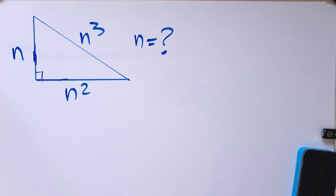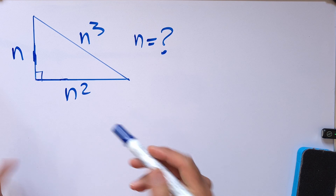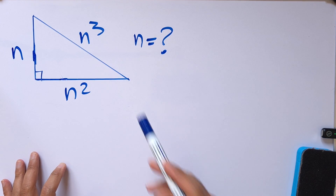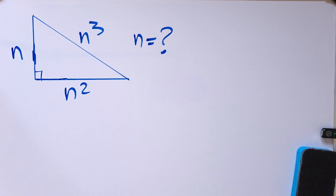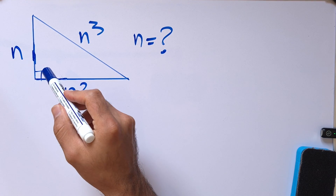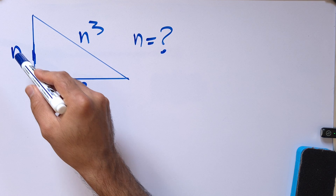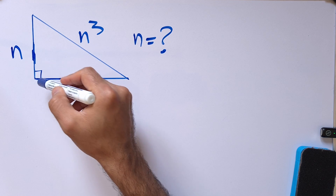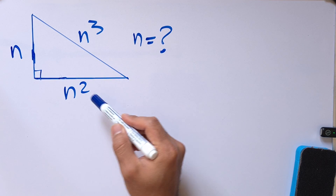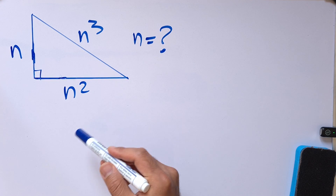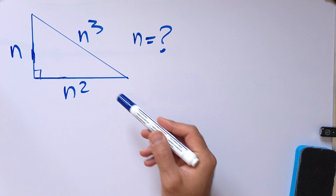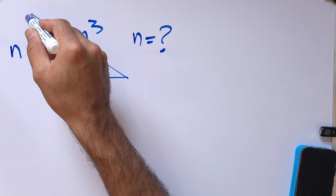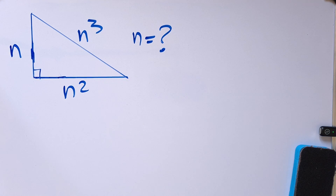The problem setup is pretty simple. One side is n, the other side is n squared, and the hypotenuse is n cubed. So what is the value of n?